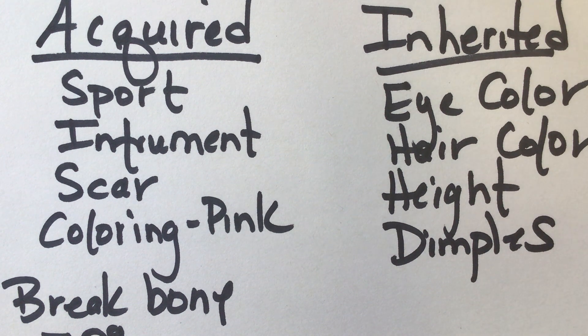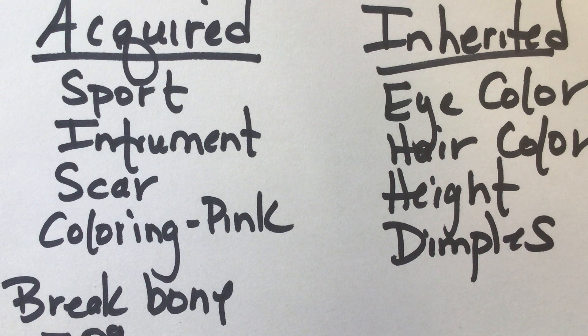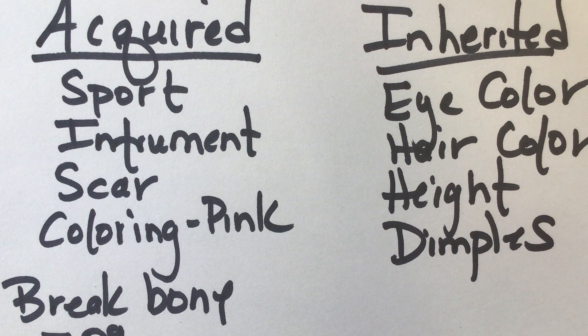Your ability to read and write and ride a bike, those are all acquired traits. You've gained them during your lifetime. The number of toes you have, or how many fingers you have, is an inherited trait. You got that from your parents.